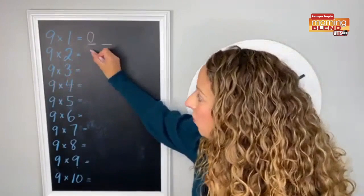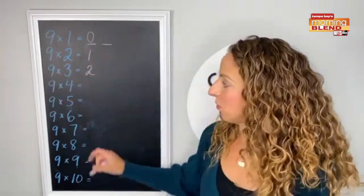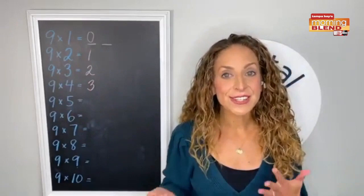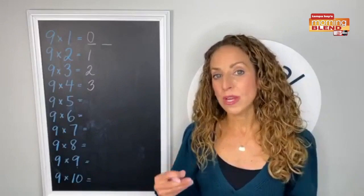Nine times two, one less than two is one. Nine times three, one less than three is two. One less than four is three. Hopefully your child starts to see a pattern. The first digit when we multiply by nines will always be one smaller than the number you're multiplying nine by.